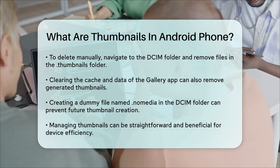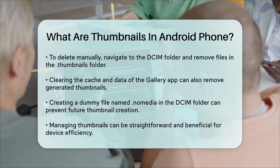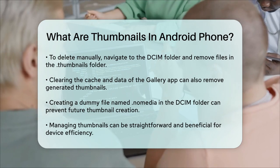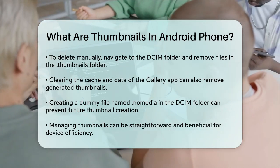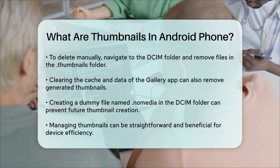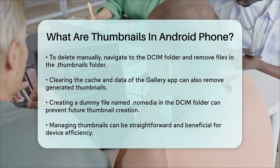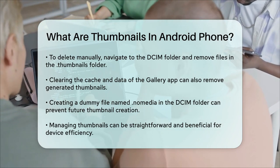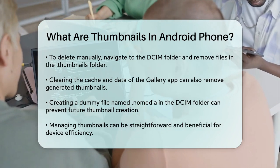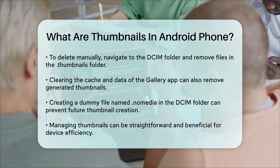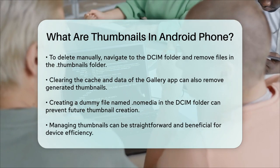To prevent thumbnails from being created in the future, you can create a dummy file named .nomedia in the DCIM folder. This will stop Android from generating thumbnails in that folder, although it might affect how some apps work.